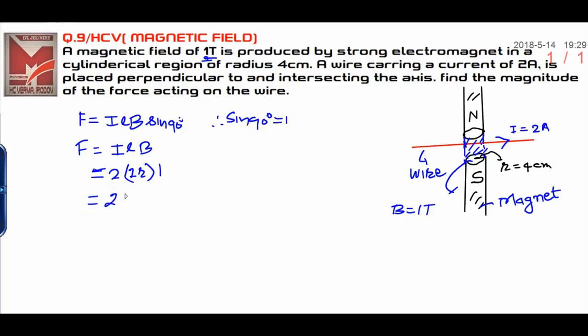Now you solve it: 2 × 2 × radius. The radius is 4 centimeters, which is 4 × 10^-2 meters, and B is 1 tesla. Finally, the force is 2 × 2 × 4 × 10^-2 = 16 × 10^-2 Newtons.